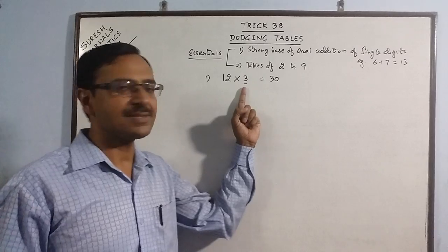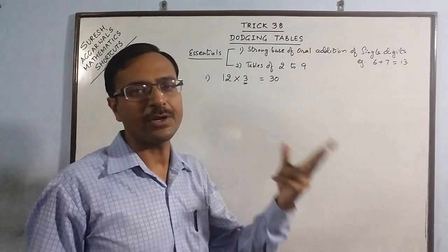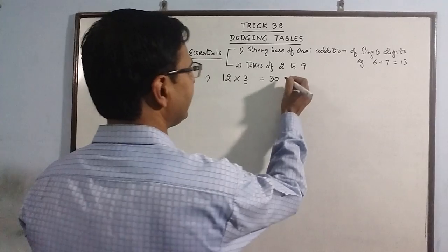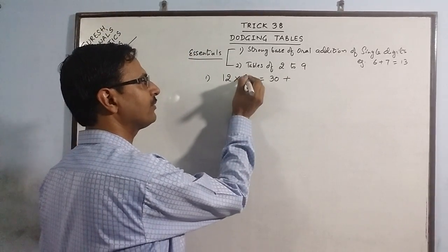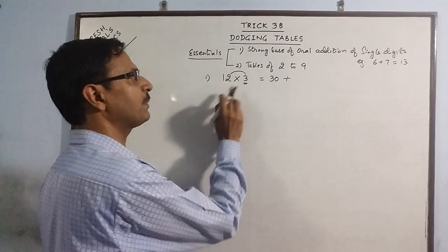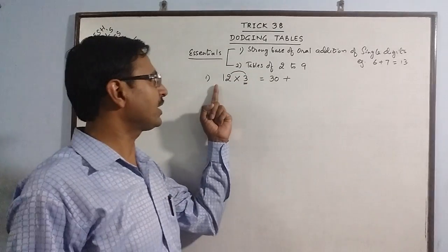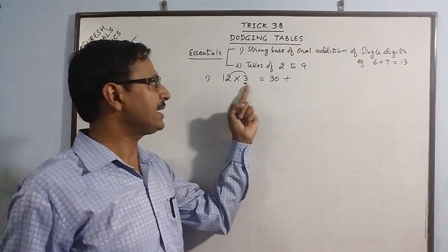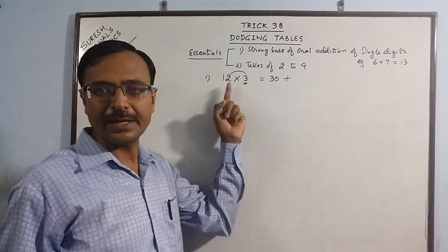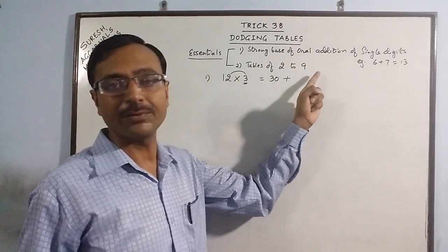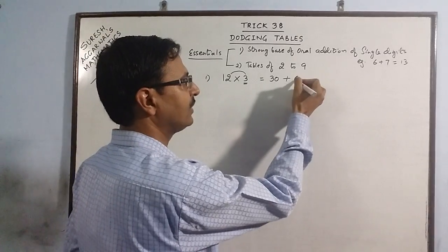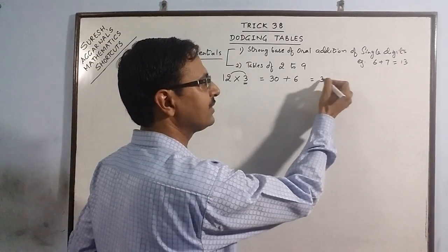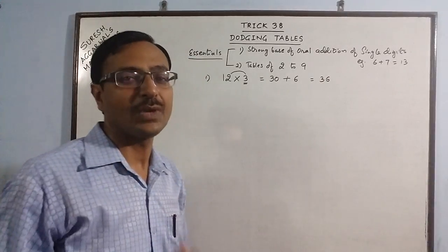Whatever number is there, he puts a 0 in front of that number and then he finds the product of this number with the ones place only. He forgets this 1 and multiplies this number with this only. Here comes the tables of 2 to 9. This is 3 into 2, 3 twos are 6, and now he has to just add 30 and 6 which will give him 36.